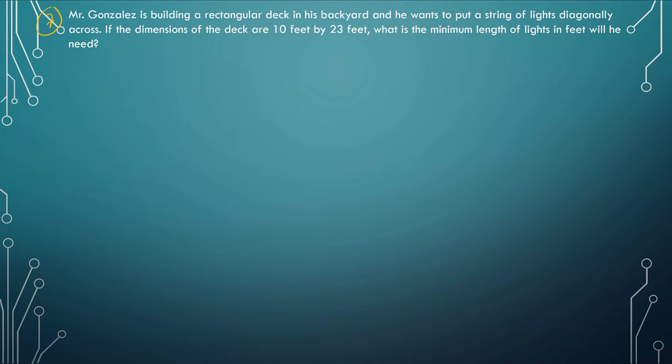So it says Mr. Gonzales is building a rectangular deck in his backyard. He wants to put a string of lights. So there is my rectangular deck. He wants to put a string of lights diagonally across. So I want to make it pretty - put lights kind of across there. The dimensions of the deck are 10 feet by 23 feet.